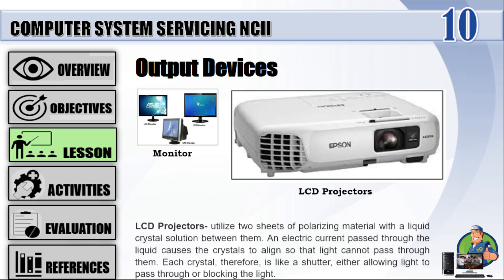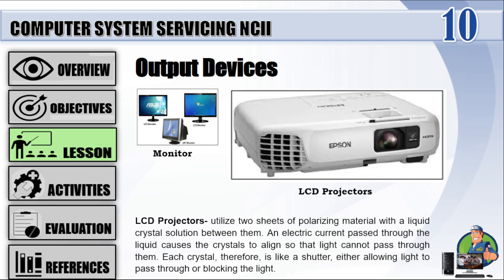LCD Projectors: LCD projectors utilize two sheets of polarizing material with a liquid crystal solution between them. An electric current passed through the liquid causes the crystals to align so that light cannot pass through them. Each crystal, therefore, is like a shutter, either allowing light to pass through or blocking the light.